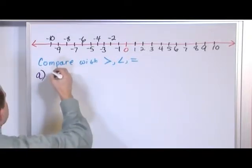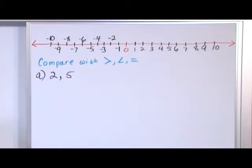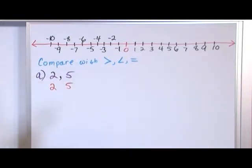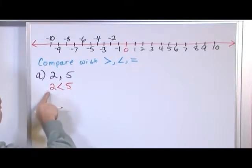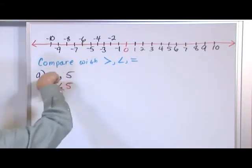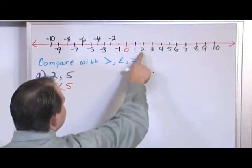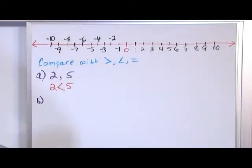What if we're comparing the numbers two and five? Your job is to put the right symbol between them. The arrow always points to the smaller number, so it points toward two. You would write: two is less than five. The reason you write it as less than is because when the arrow points to the left, that's how you read it. And you can see from the number line that two is indeed less than five.